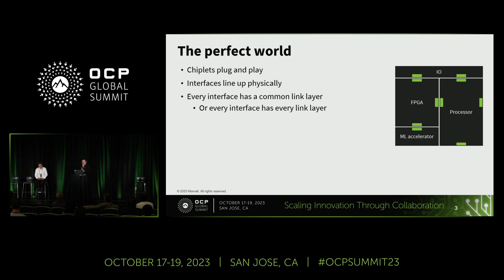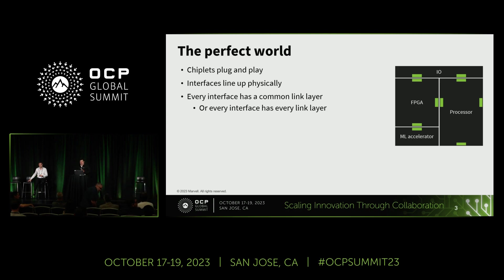This is my view of the perfect world: we have an advanced processor design here with an FPGA, IO chiplets, and a machine learning accelerator. We have chiplet-based functionality with a lot of different kinds of blocks with a lot of different capability, and I can build this today using great advanced packaging technology with wonderful interfaces that line up perfectly. Ideally, every interface has a common link layer so they can communicate with each other — can every interface have every link layer for die-to-die interconnect to enable an open chiplet economy?